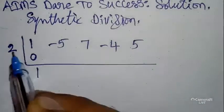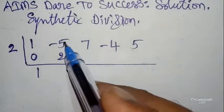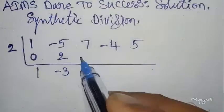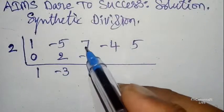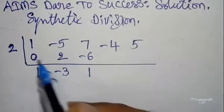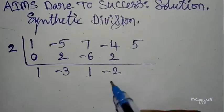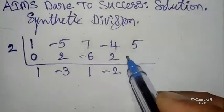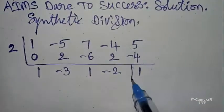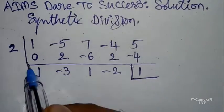Cross multiply: 1 × 2 = 2. Write here. 2 + (-5) = -3. 2 × (-3) = -6. Write here. 7 + (-6) = 1. Cross multiply: 1 × 2 = 2. 2 + (-4) = -2. Cross multiply: 2 × (-2) = -4. 5 + (-4) = 1. Write the last value.